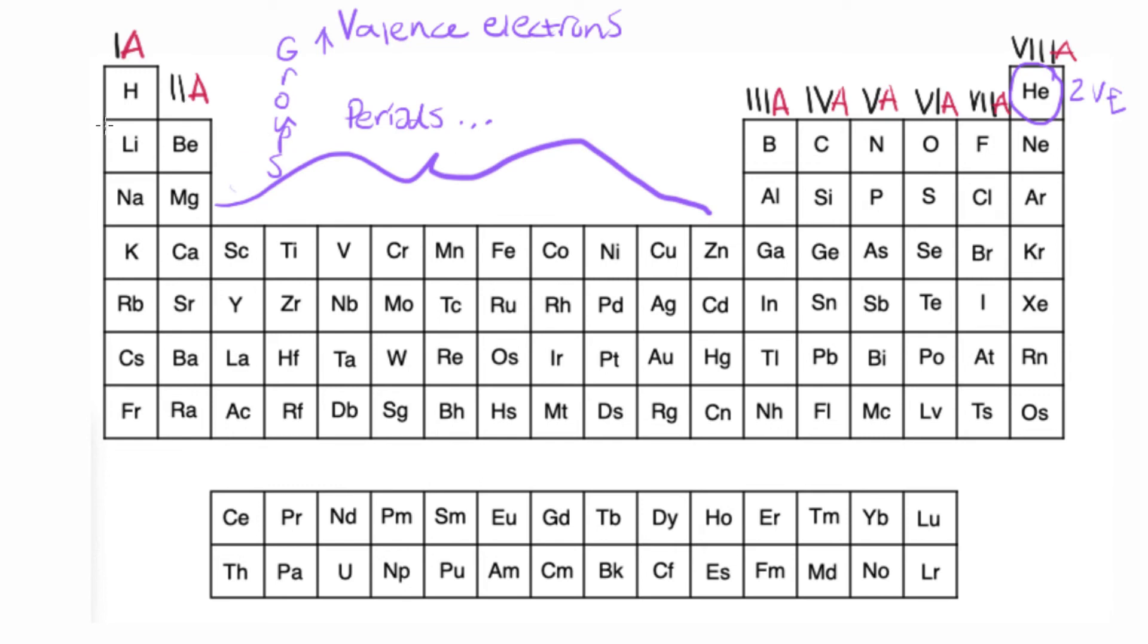So let's just take a look at some examples. So how many valence electrons would lithium have? This would have 1 valence electron. And magnesium would have 2 valence electrons because it's in group 2A.